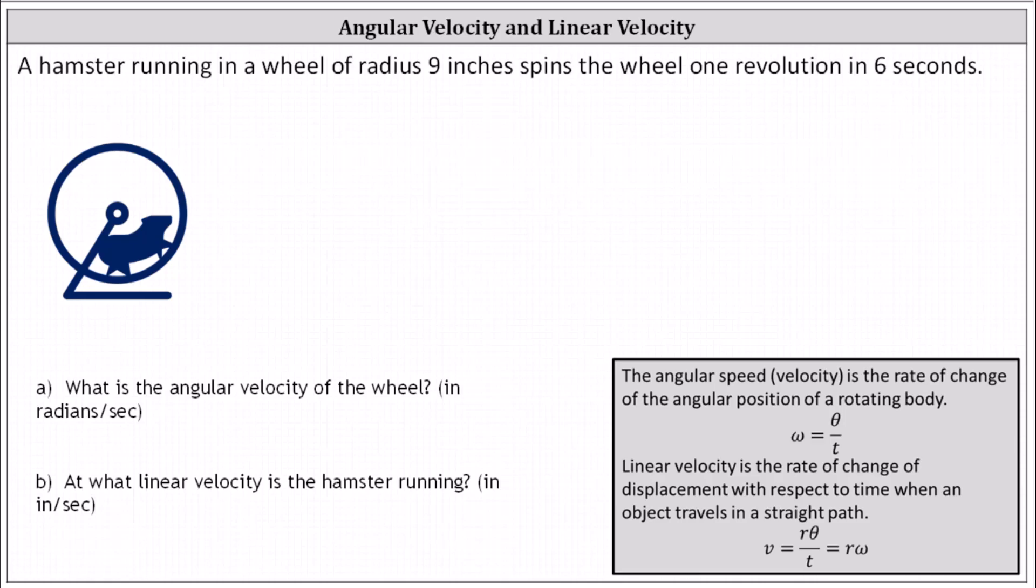The angular velocity or speed is the rate of change of the angular position of a rotating body. The angular velocity omega equals the change in theta divided by the change in time t.